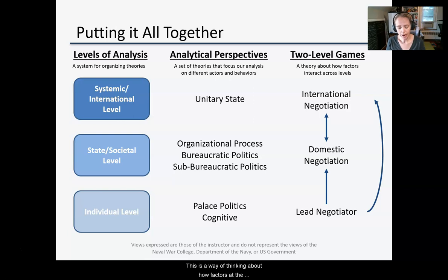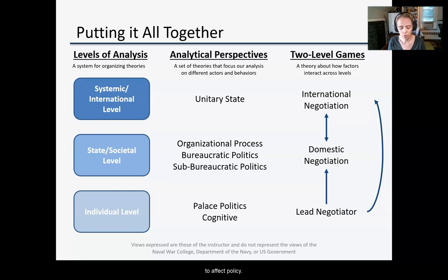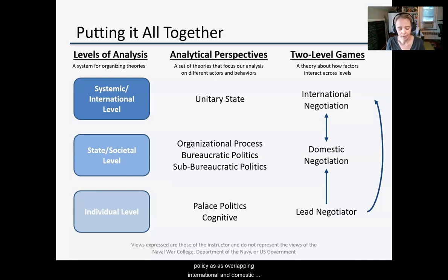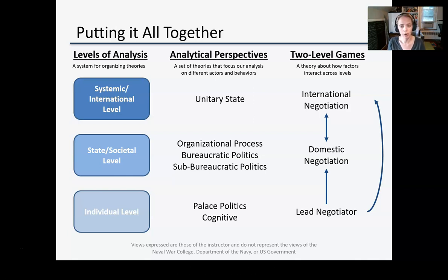This is a way of thinking about how factors at the different levels of analysis that we discussed previously interact and work together to affect policy. We'll start by talking about the general idea of foreign policy as overlapping international and domestic negotiations, and then we'll talk about key terms associated with this theoretical framework.